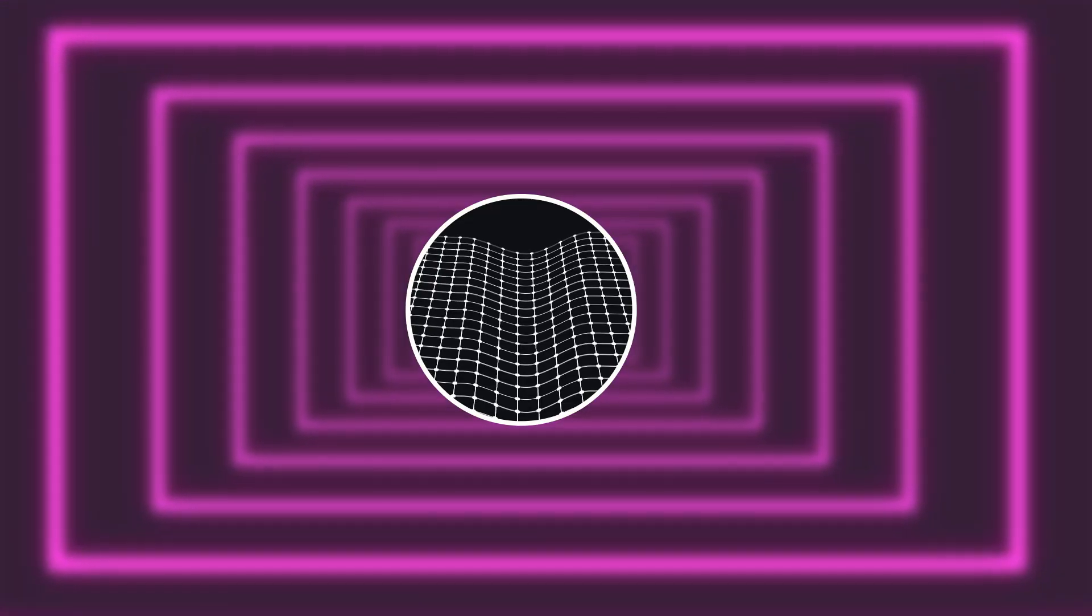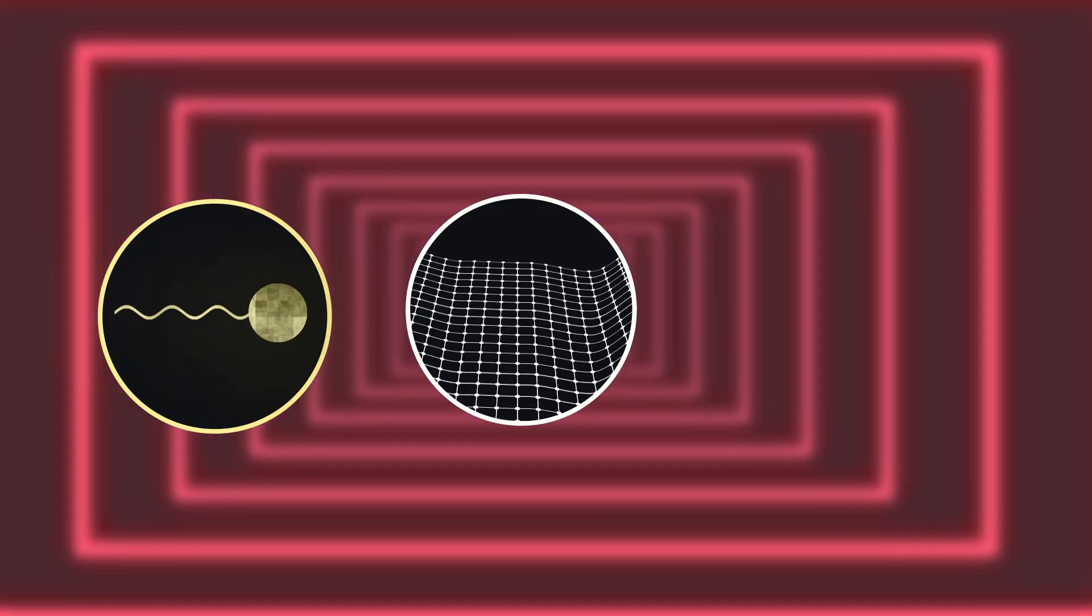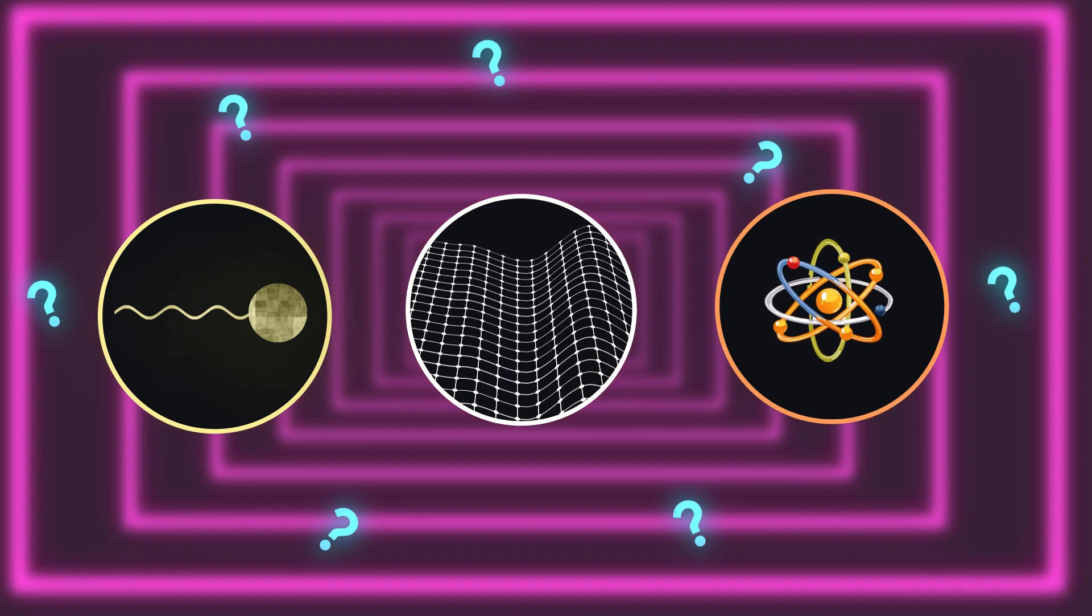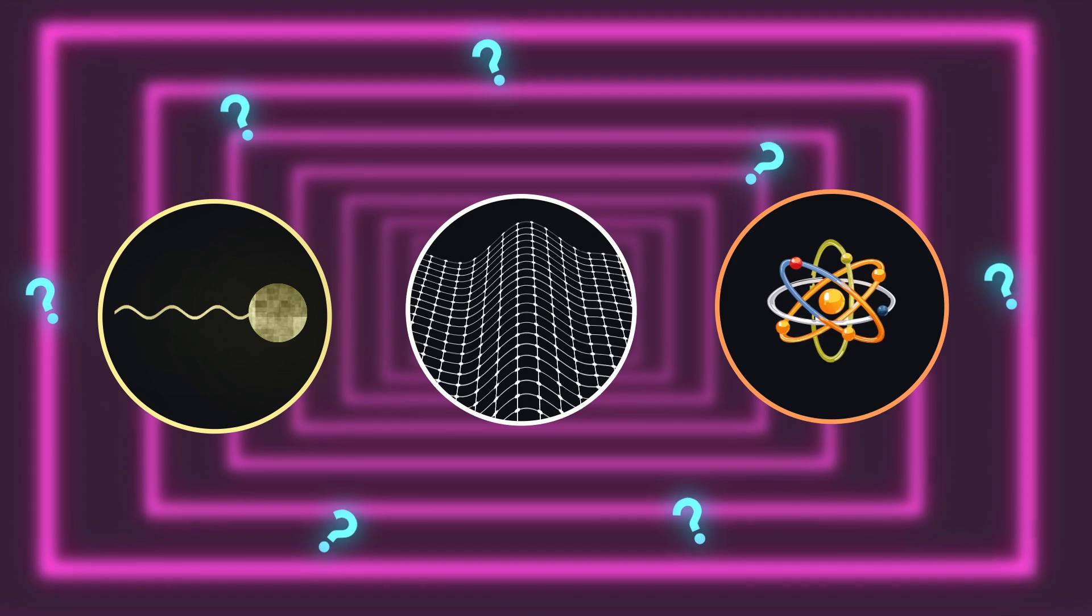The concept of the multiverse has long fascinated both scientists and storytellers alike. But what if these parallel universes didn't just exist, but operated under entirely different laws of physics? Imagine a reality where gravity is stronger, light moves sluggishly, or atoms behave unpredictably. How would such variations alter the universe as we know it?